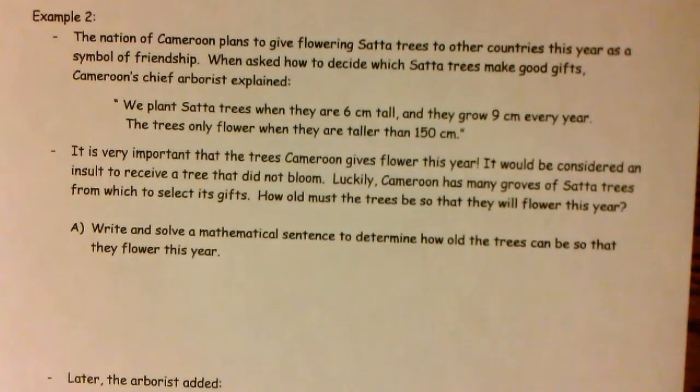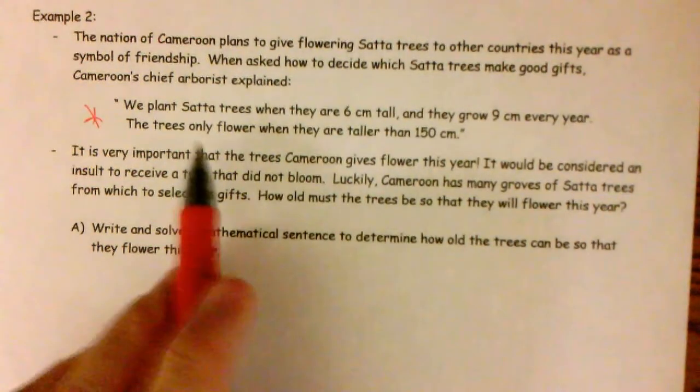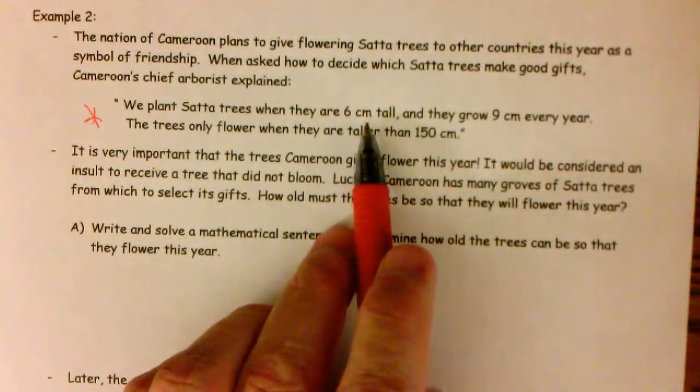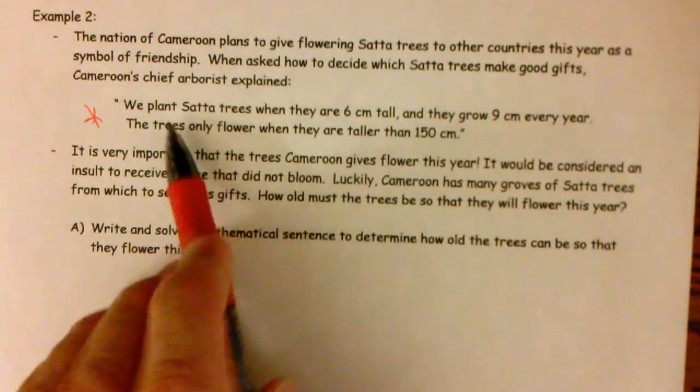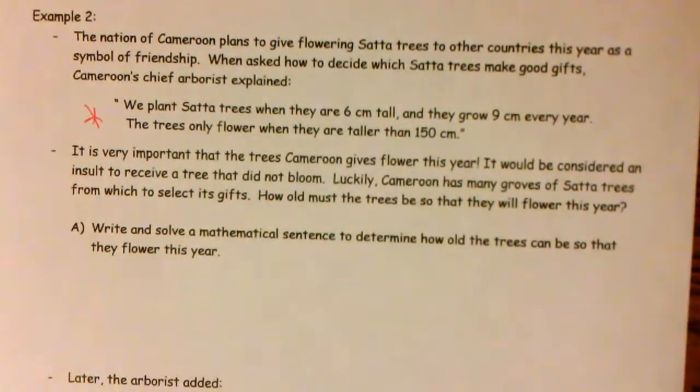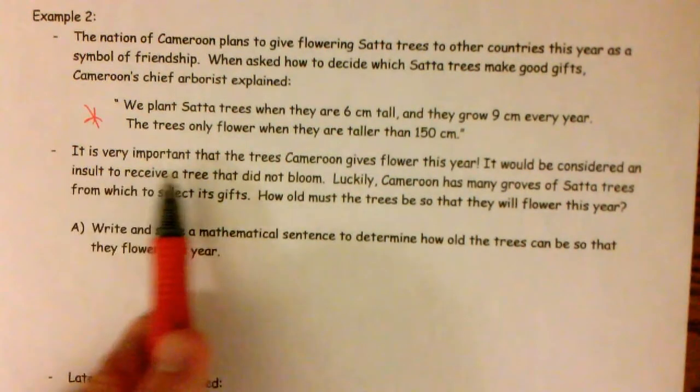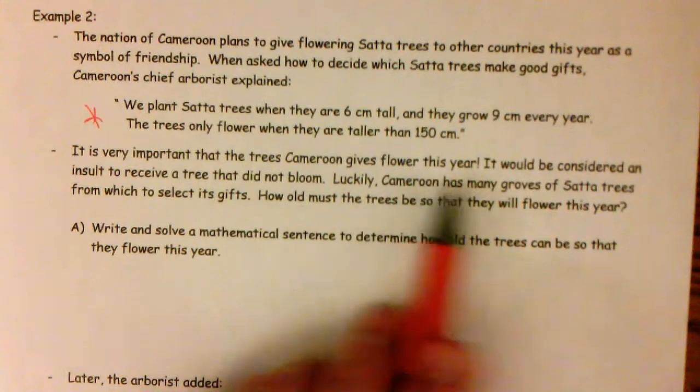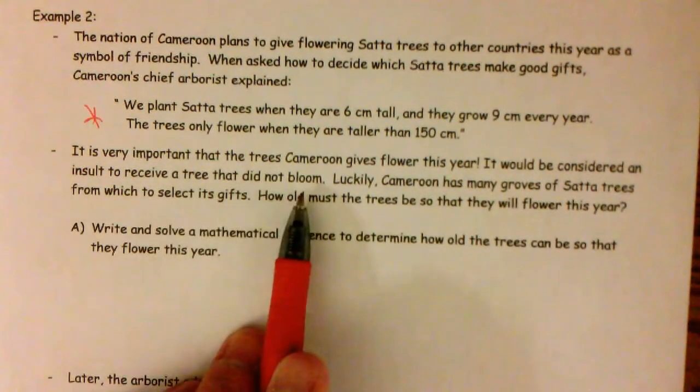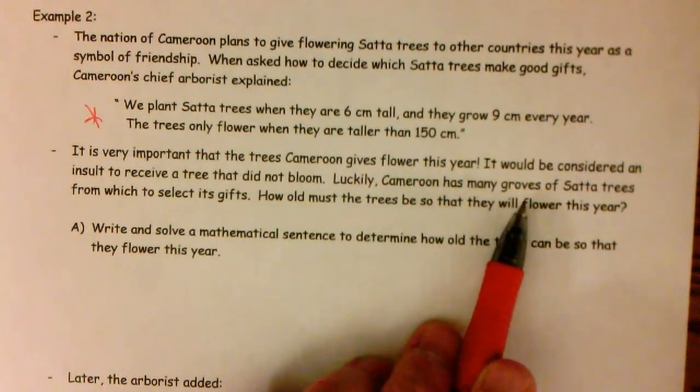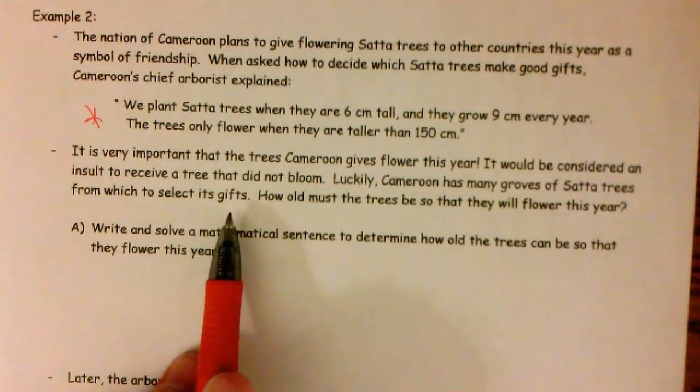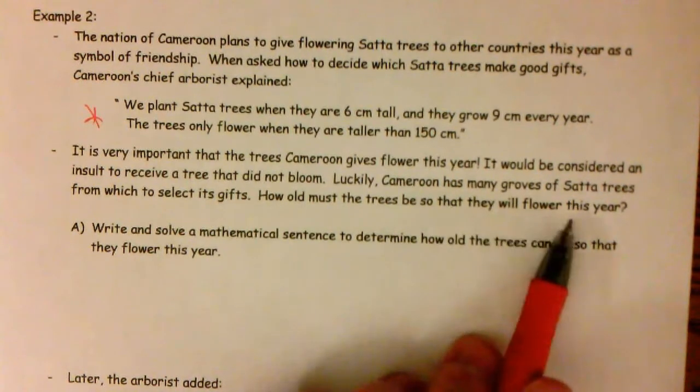We're going to do one more of these and call it a day. Okay, so this one, example two. The nation of Cameroon plans to give flowering sata trees to other countries this year as a symbol of friendship. When asked how to decide which sata trees make good gifts, Cameroon's chief arborist explained, this is important: we plant sata trees when they are six centimeters tall and they grow nine centimeters every year. The trees only flower when they are taller than 150 centimeters. It is very important that the trees Cameroon gives flower this year. It would be considered an insult to receive a tree that did not bloom. Luckily, Cameroon has many groves of sata trees from which to select its gifts. How old must the trees be so that they will flower this year?